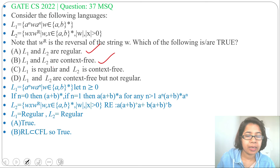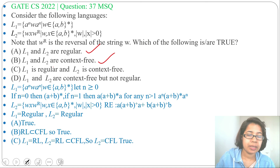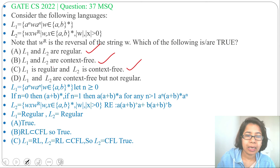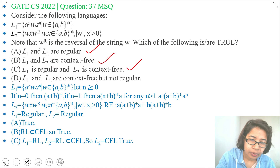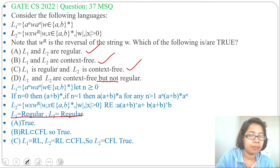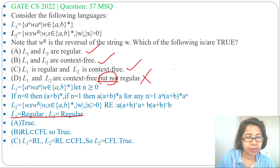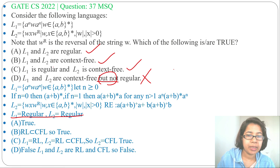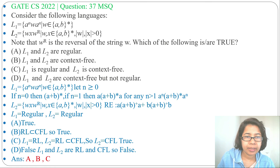Option C: L1 is regular and L2 is context-free — L2 is regular, and since regular is a subset of context-free, L2 is also context-free. So this is true. Option D: L1 and L2 are context-free but not regular — this is false, because we found both are regular. Therefore the correct answers are options A, B, and C.